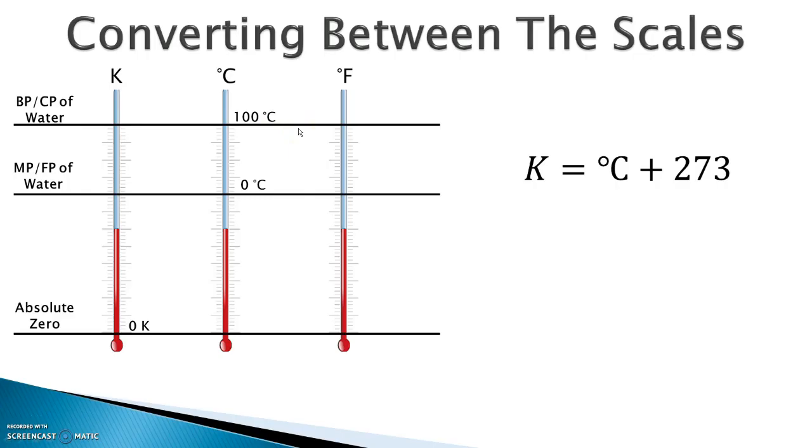We do know that Kelvin is 273 degrees higher than that of Celsius. So if that's true, that means Celsius is 273 less than Kelvin. Coming down here, we're going to look at absolute zero in Celsius. Celsius is 273 less, so that means you have negative 273 because it's 273 less than zero, so that means a negative value.